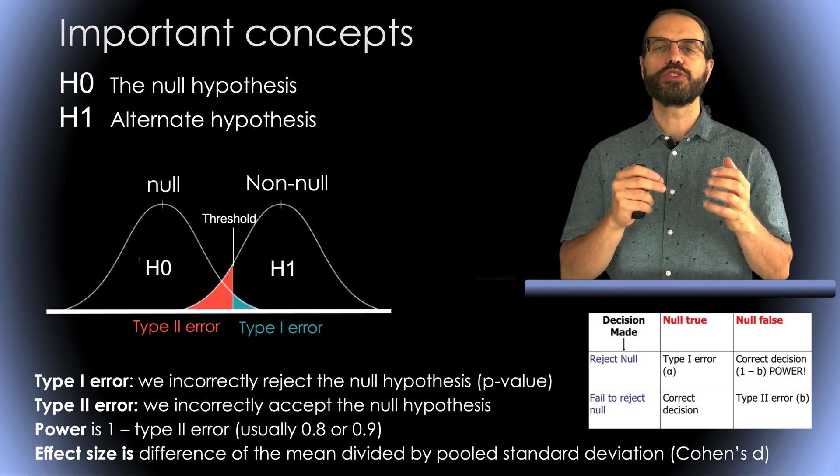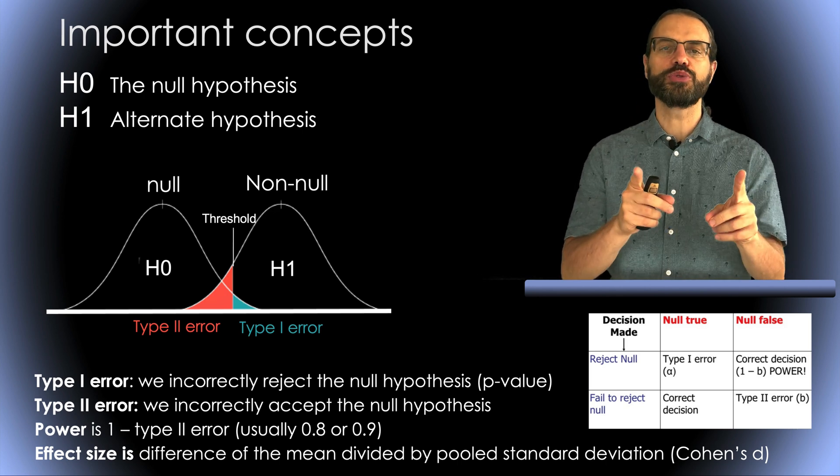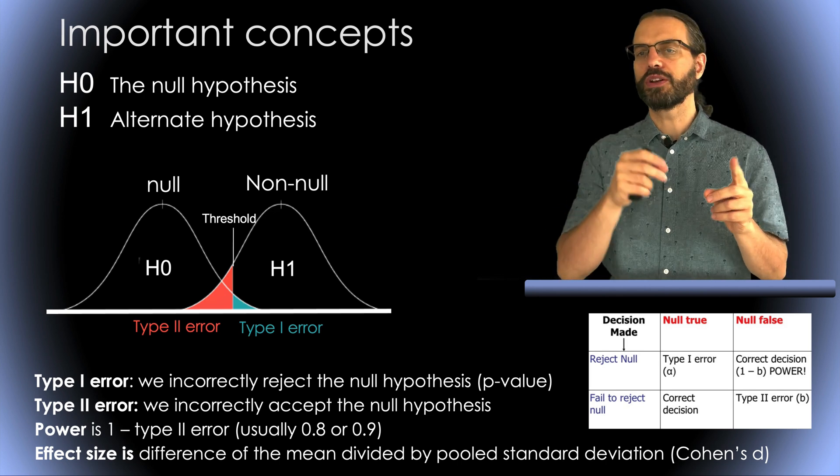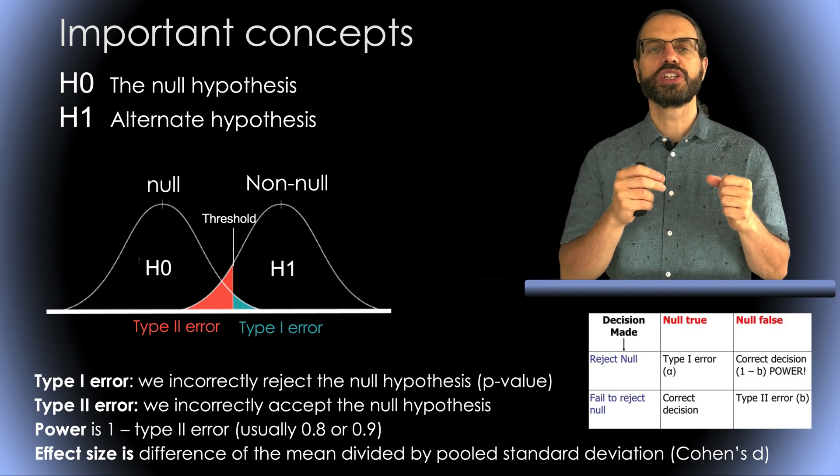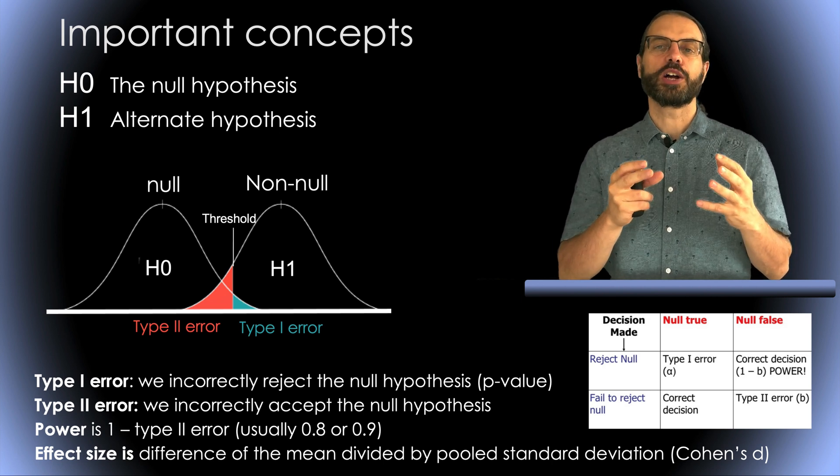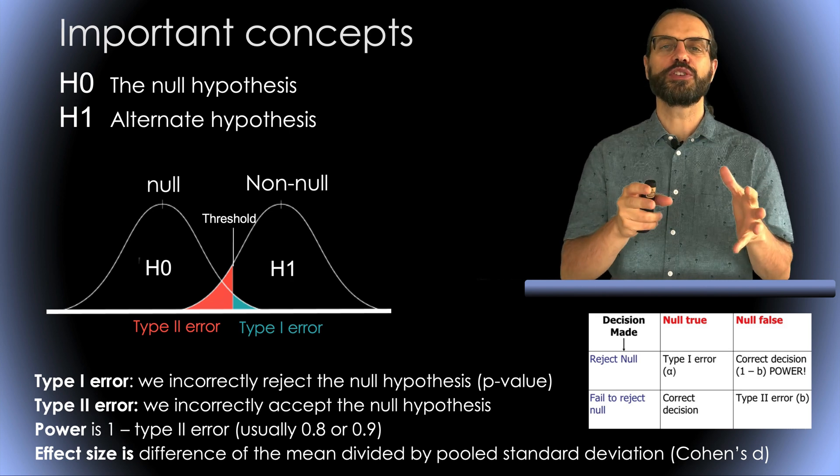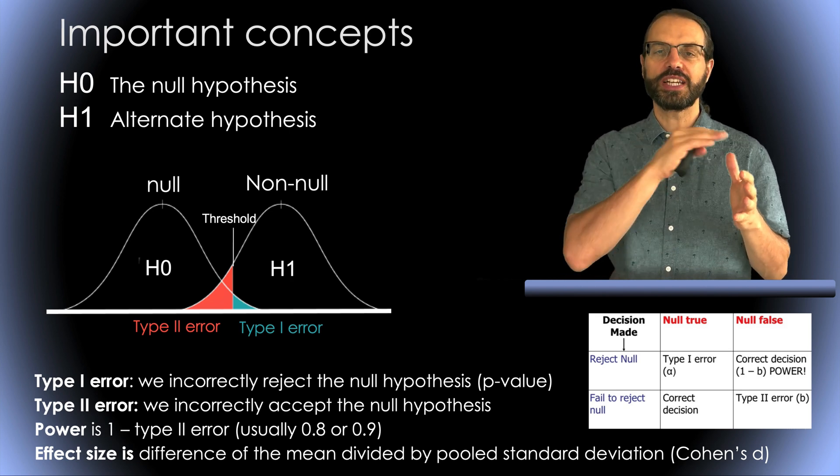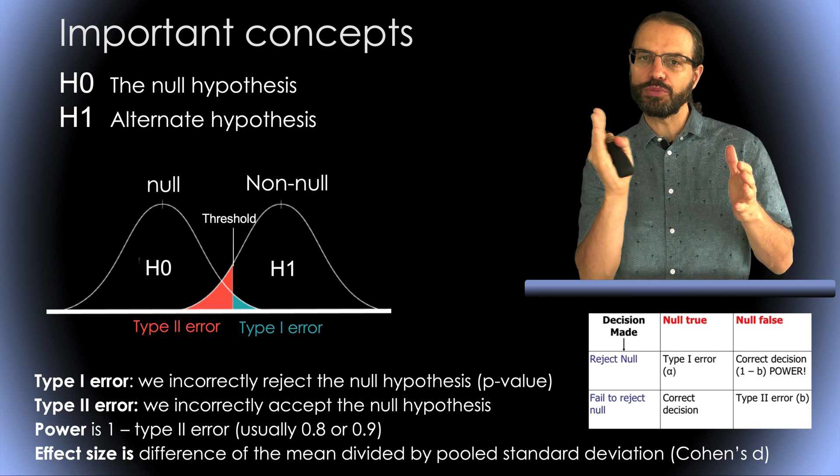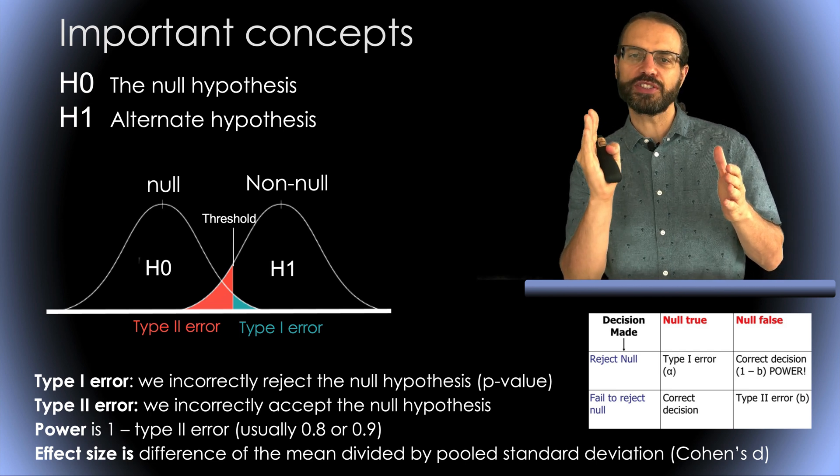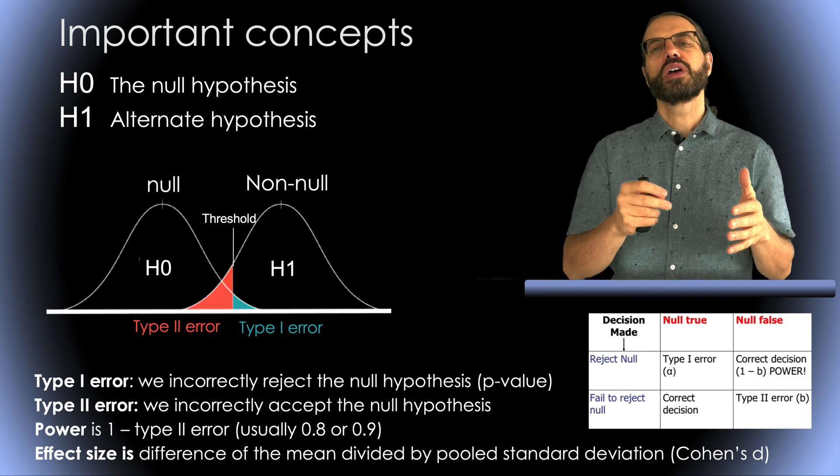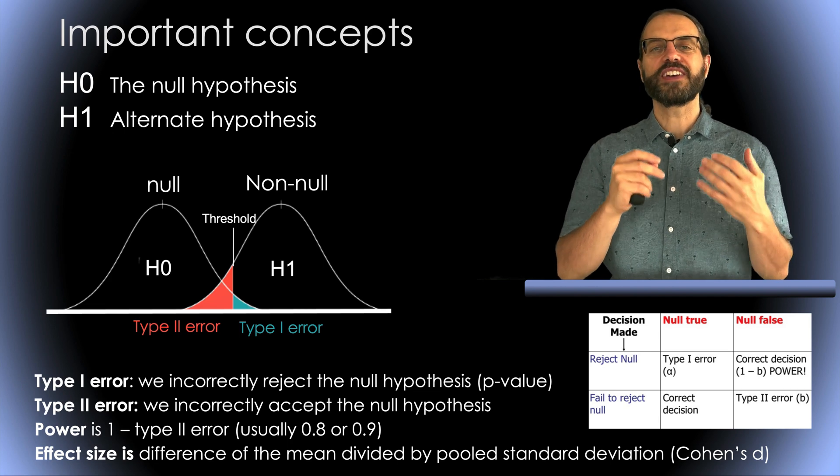Finally, standard practices recommend reporting the exact p-value and not only if it is above or below the 0.05 threshold, which is a threshold which was arbitrarily set in the 1920s. To compute the exact p-value, you can simply assess the relative area in the tail of the distribution using your experimental value as a threshold.